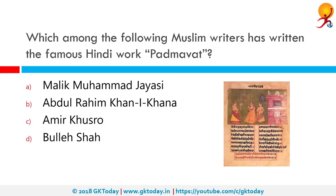Which among the following Muslim writers has written the famous Hindi work Padmavat? The correct answer is Malik Muhammad Jaisi. Padmavat is an epic poem written in 1540 by Sufi poet Malik Muhammad Jaisi. It is the oldest extant text among important works in Awadhi and is a famous piece of Sufi literature relating an allegorical fictional story about the Delhi Sultan Alauddin Khilji's desire for the titular Padmavati, the Queen of Chittor.